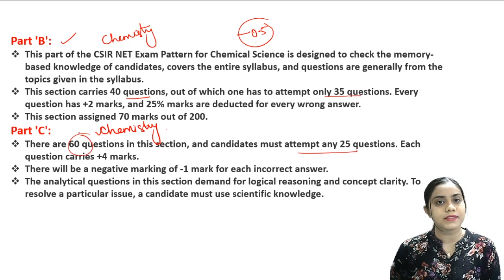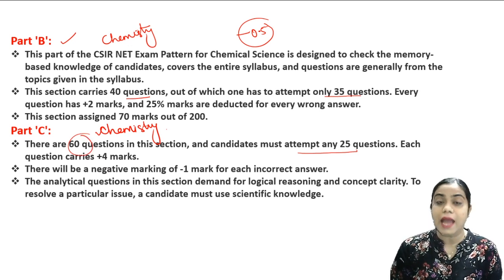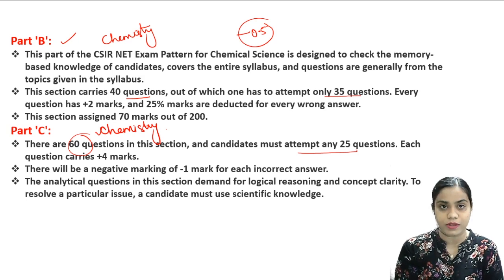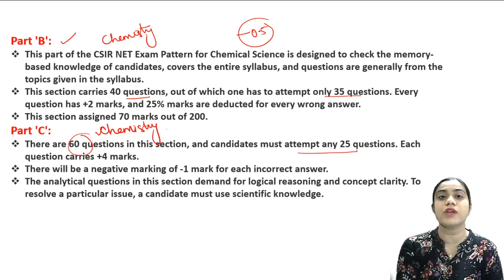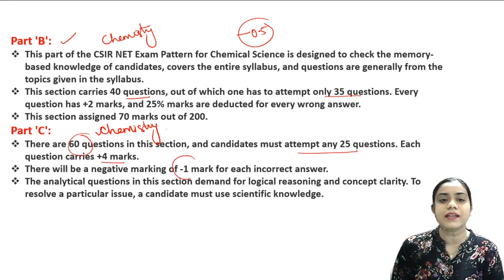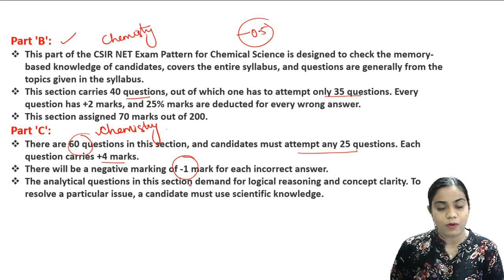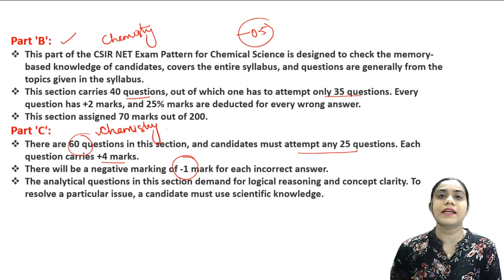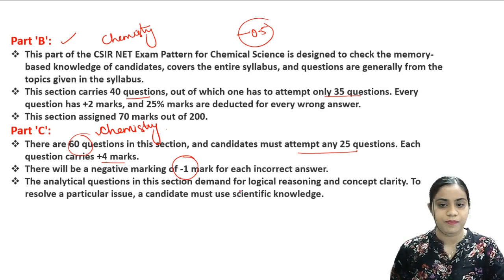In Part C, you have to attempt only 25 questions out of 60 total questions. You should choose the 25 questions you are most confident about. Each question in Part C carries four marks, and there is a higher negative marking of minus one. So choose your 25 questions out of 60 carefully, as each carries four marks with a minus one penalty.